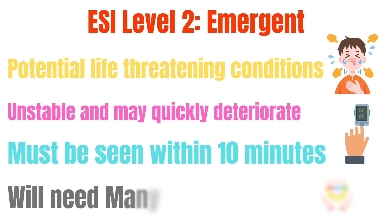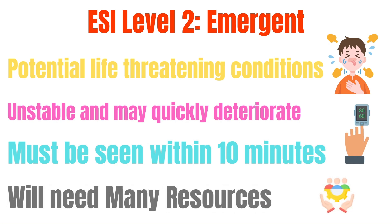An ESI level two is known as emergent. It is assigned to patients with potentially life-threatening conditions who are unstable and may deteriorate without prompt medical attention. These patients should be seen by a provider within 10 minutes. Examples include chest pain with suspected ACS, an asthma exacerbation, moderate trauma, or stroke-like symptoms. These patients will have unstable vital signs and/or a time-sensitive issue requiring prioritization. They must be seen within 10 minutes and will also use many resources.